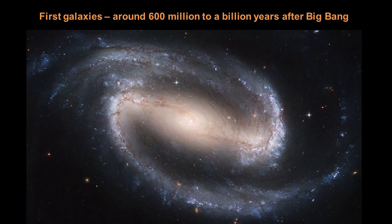After the first stars came about, we see galaxies form later on, and this occurred around 600 million to a billion years after the Big Bang. A galaxy is a gravitationally bound system composed of interstellar gas, dust, and of course, stars. And in some cases, a lot of stars.